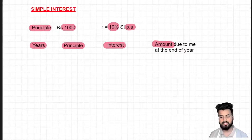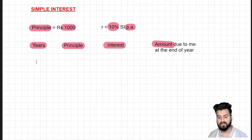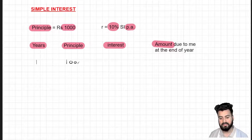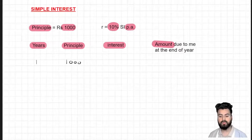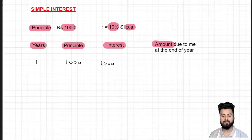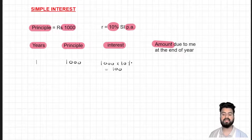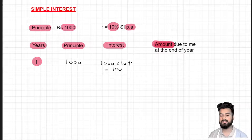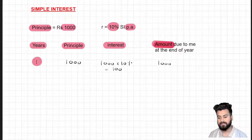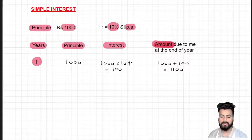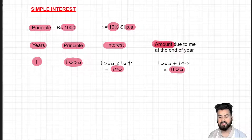Let's do this calculation for the first year. The principal is 1000 rupees because we are just starting. The interest received is 10% of the principal — 10% of 1000 — which gives interest of 100 rupees. The total amount due at the end of the first year is principal plus interest: 1000 plus 100, giving an amount of 1100 rupees, where the extra 100 rupees is the value of interest.